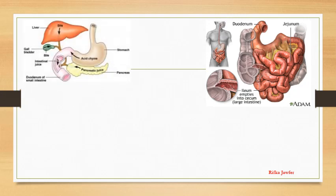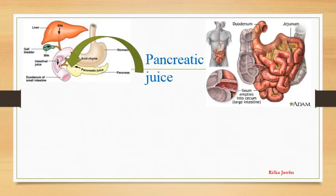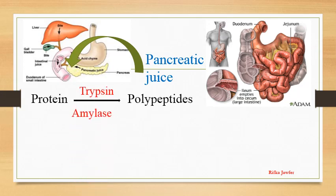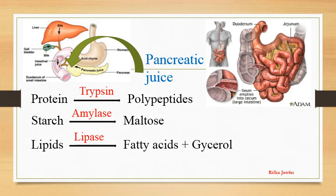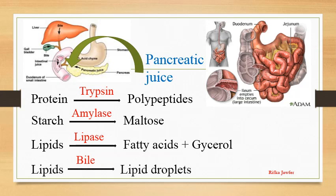The small intestine is around 7 meters long and begins with a C-shaped duodenum. Ducts of the pancreas and gallbladder open to the duodenum. The pancreas releases pancreatic juice. Trypsin present in it converts protein to polypeptides. Amylase converts starch to maltose. Lipase converts lipids to fatty acid and glycerol. Bile, which is produced in the liver, stored in the gallbladder and carried by the bile duct, is released to the duodenum. It converts lipids to lipid droplets through a process called emulsification.